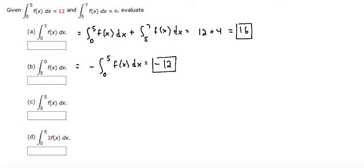For part c, we're doing the integral from 5 to 5. Anytime these two numbers on the integral are the same, that's always equal to 0.